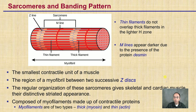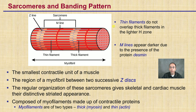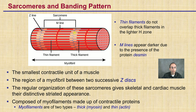The sarcomere has this banding pattern. There are thin filaments that don't overlap the thick filaments in the lighter H-zone. The M-lines appear darker due to the presence of the protein desmin. The smallest contractile unit of the muscle is a sarcomere — the region of the myofibril between two successive Z-discs. That is your sarcomere in that defined region.